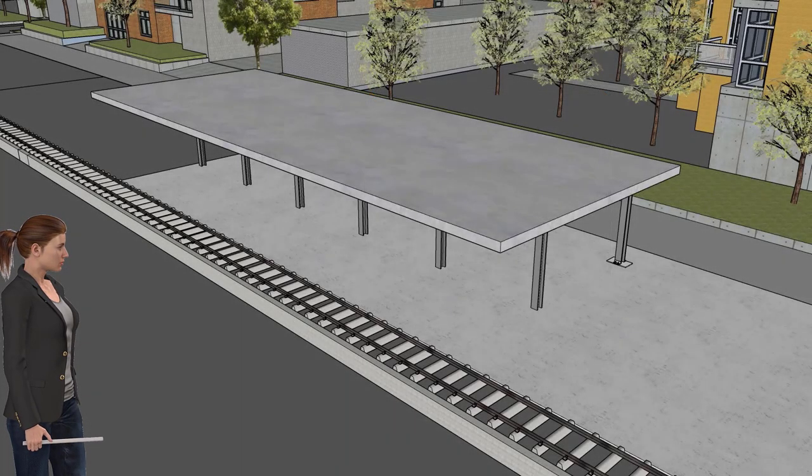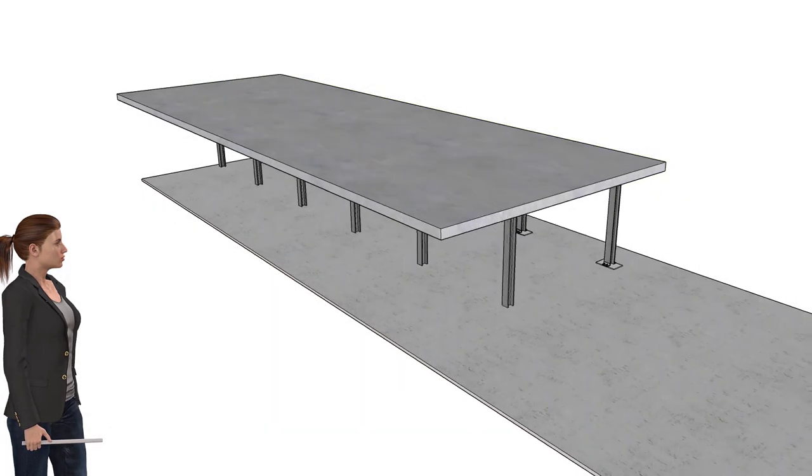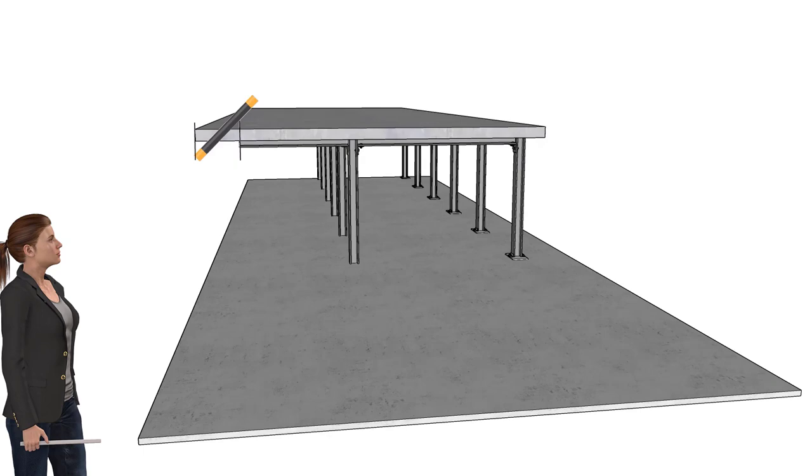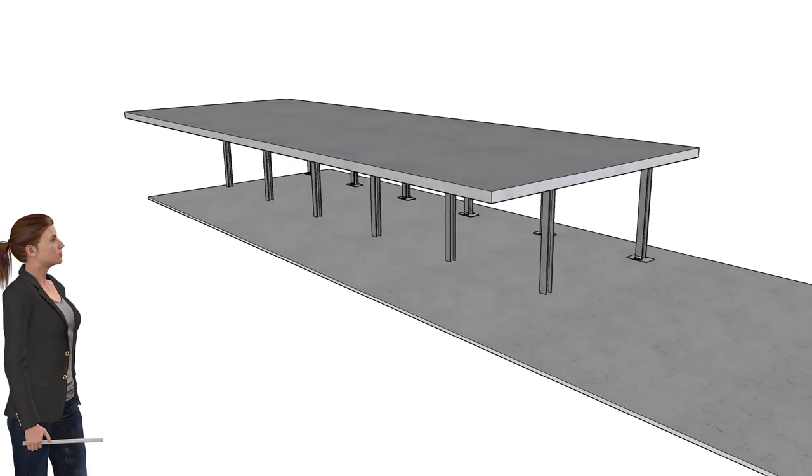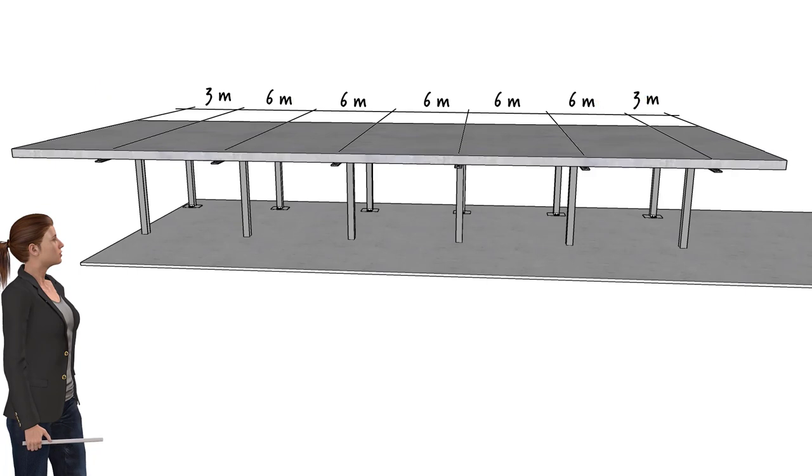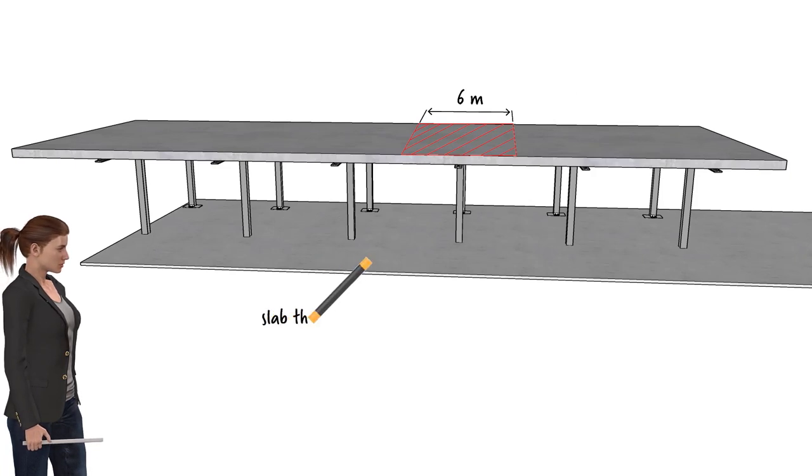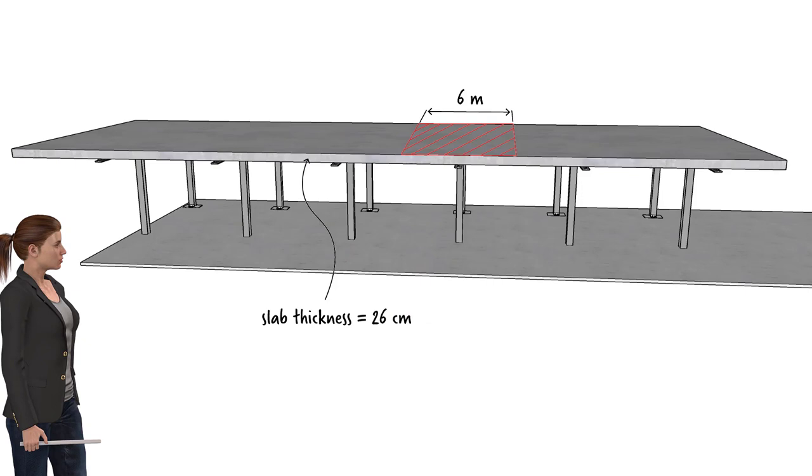Now let's figure out the load that is being applied to the frame. The overall dimensions of the concrete slab are... The slab extends past the steel frame by one meter on one side. The frame divides the slab area into seven segments. The width of each interior segment is six meters, while each exterior segment has a width of three meters. Therefore, the portion of the slab supported by a typical frame is this. We call this the tributary area. It is six meters wide. Suppose the thickness of the slab is 26 centimeters.